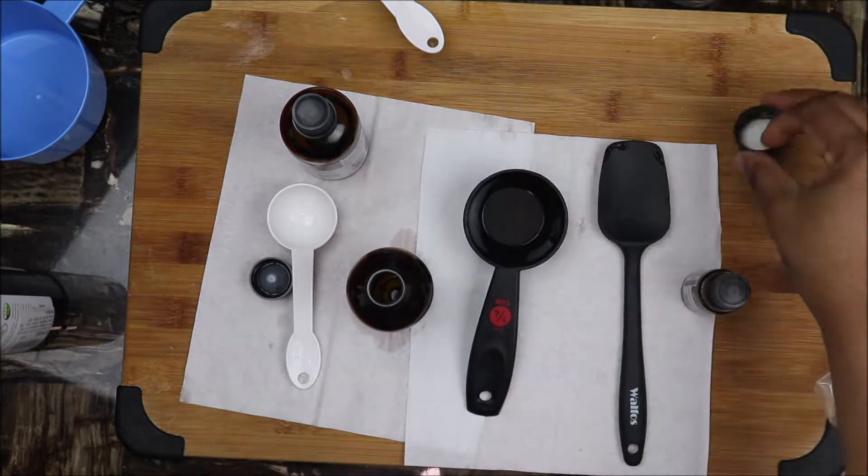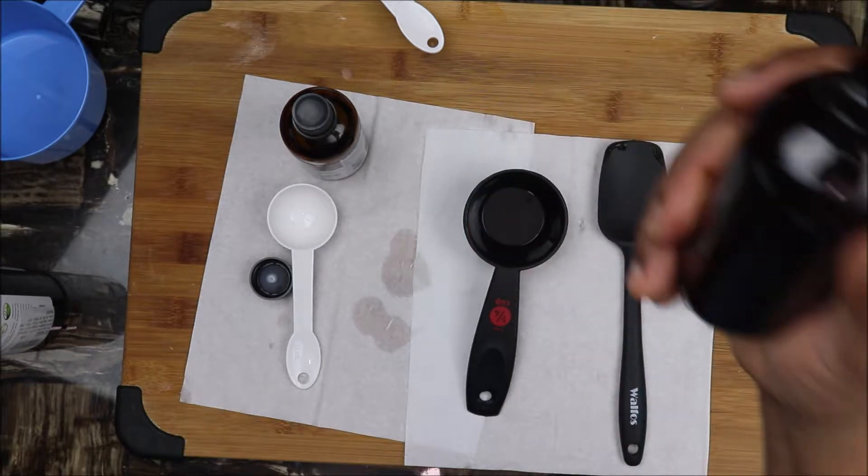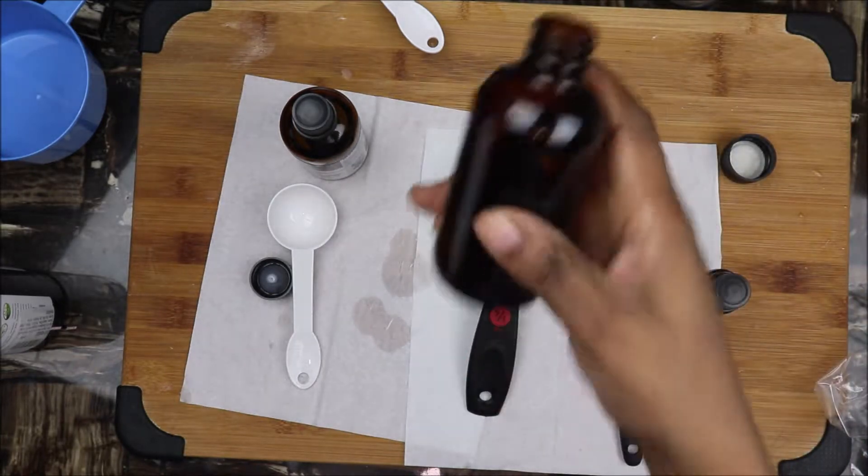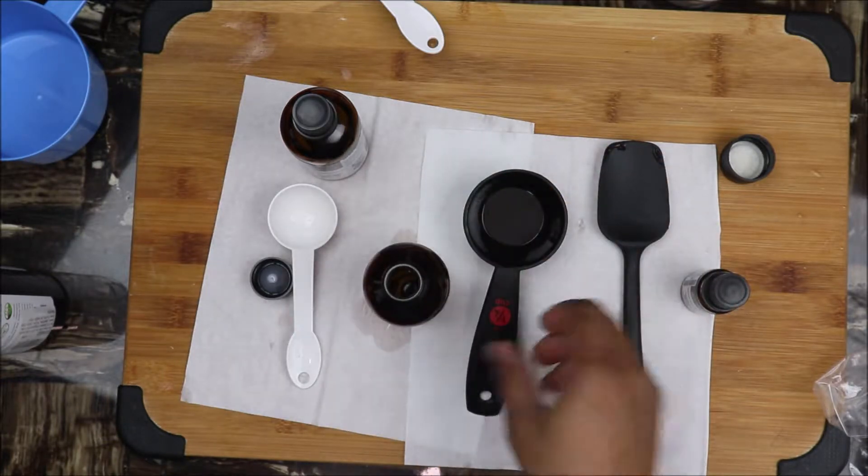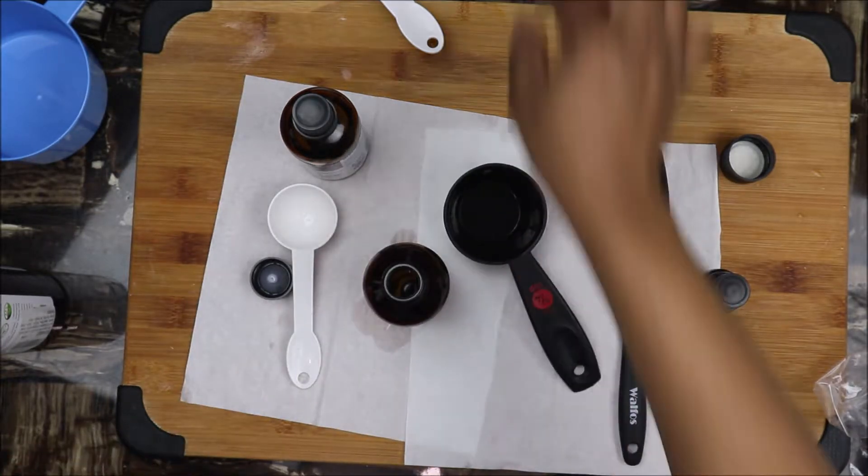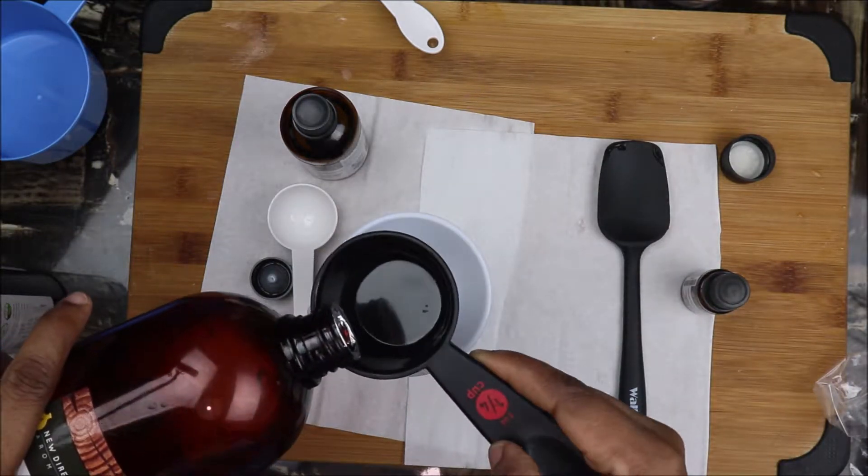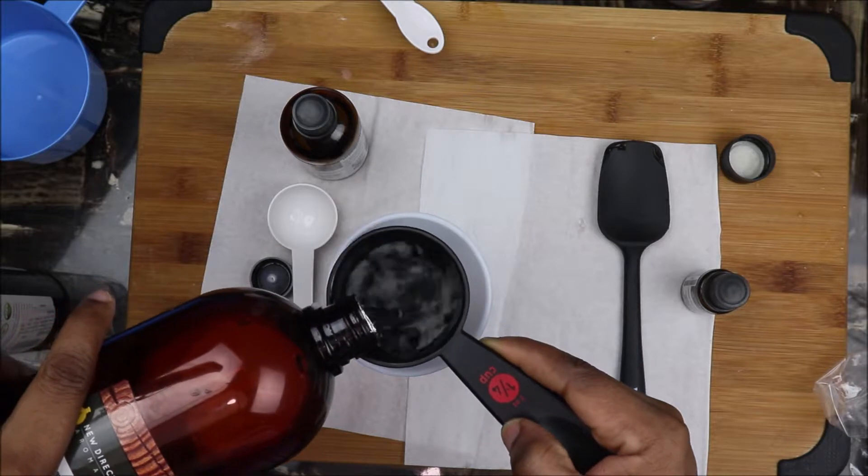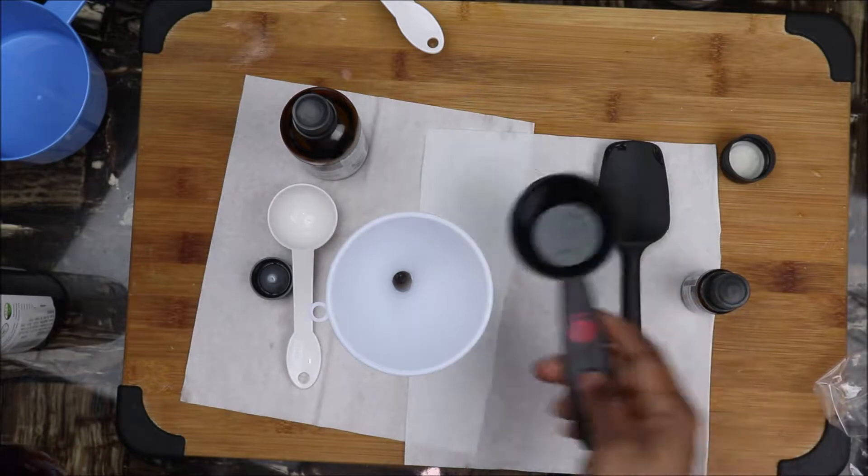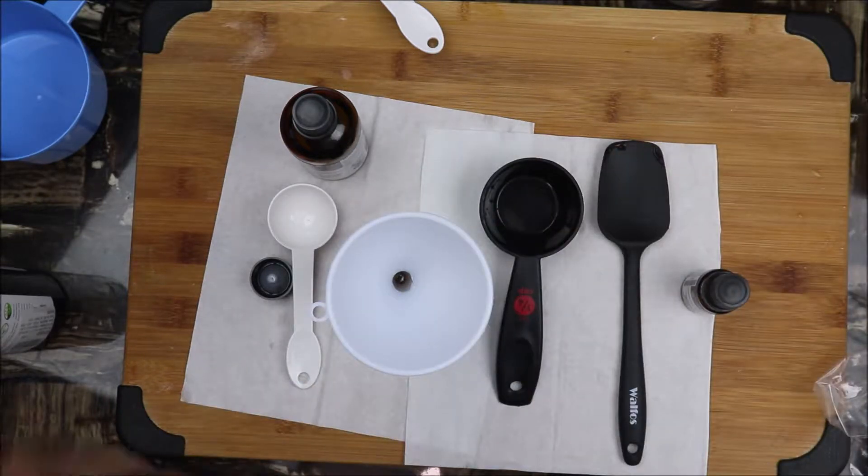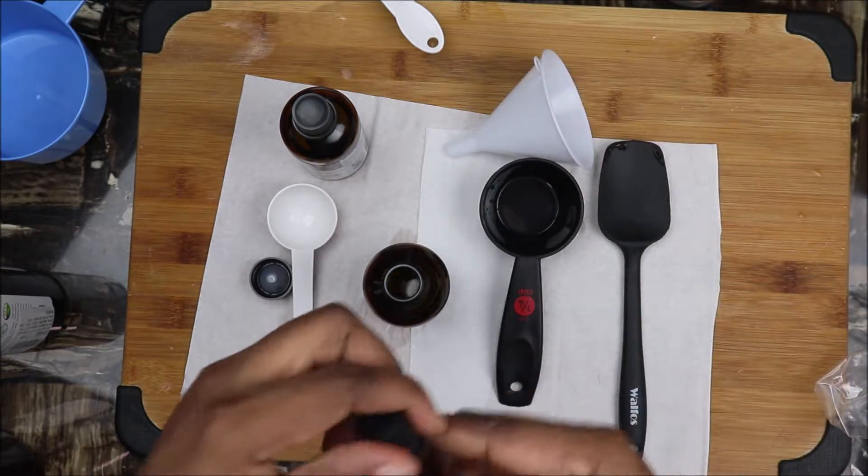You need a bottle for the toner, preferably a dark colored bottle because we're going to keep this out of the fridge. A dark color bottle is going to extend the shelf life. So one quarter cup of witch hazel distillate.